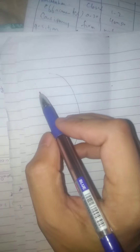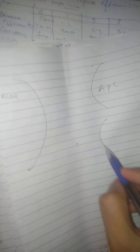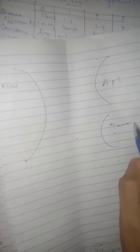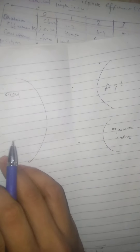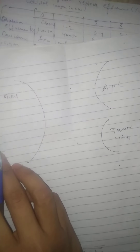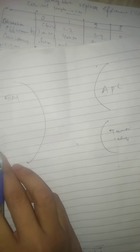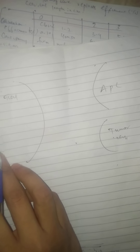Let's discuss immune checkpoint interactions. I am drawing a T cell on this side and on the other side there is an antigen presenting cell, and here is a tumor cell. These are signals that modulate T cell activation and function, which decrease the immune response against tumor cells.